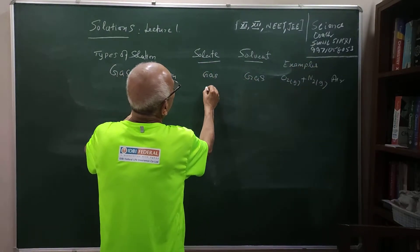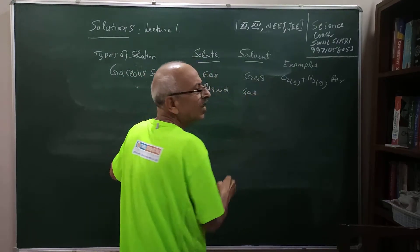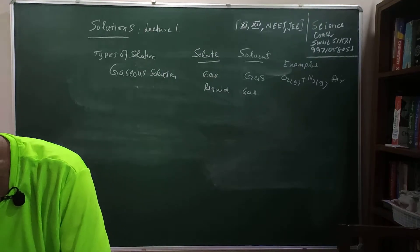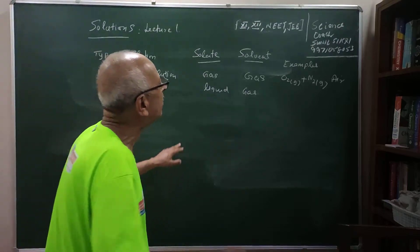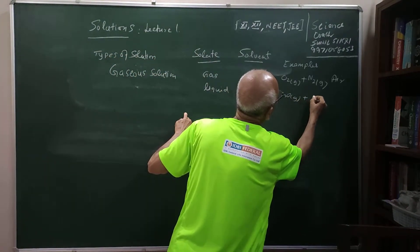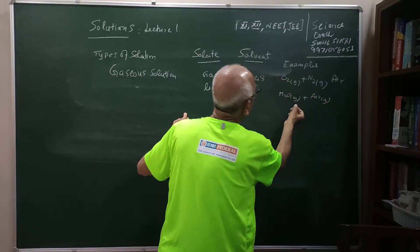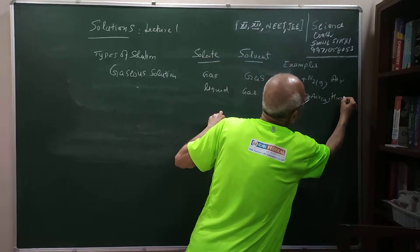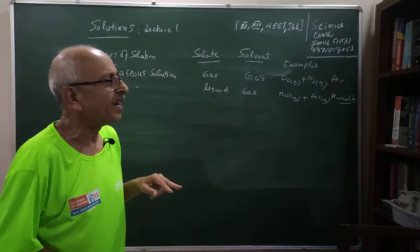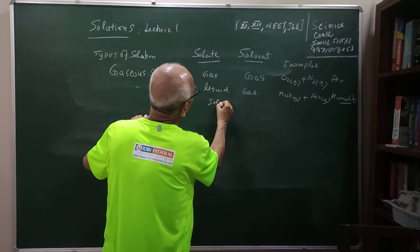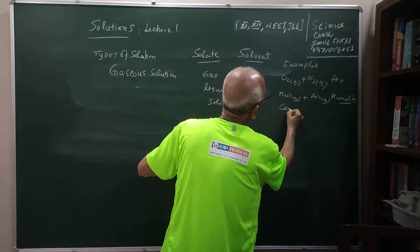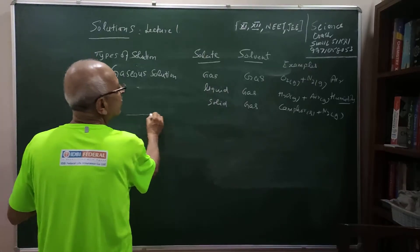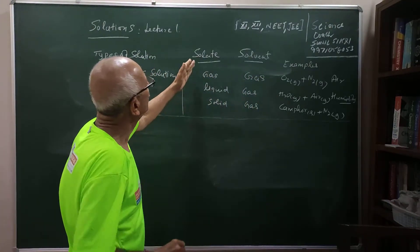You can also put a liquid in a gas. For example, if you put chloroform in nitrogen, that is a liquid-in-gas solution. Similarly, water vapor in air — that is humidity — is an example of a liquid solute in a gaseous solvent. You can also have a solid in a gas: for example, camphor solid dissolved in hydrogen gas. These are all examples of gaseous solutions where the solute can be gas, liquid, or solid.